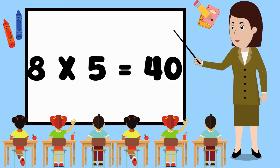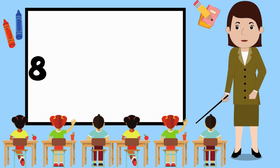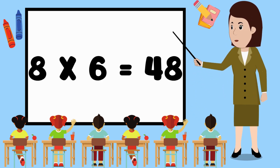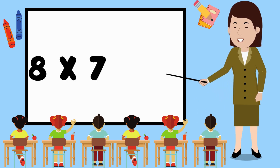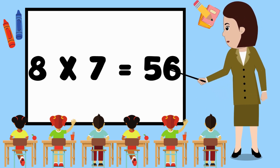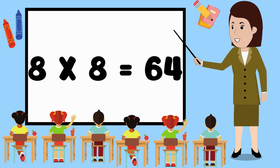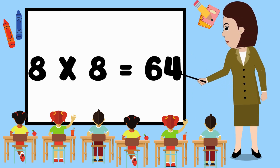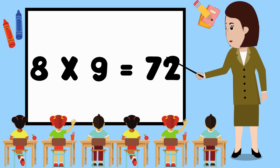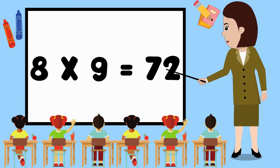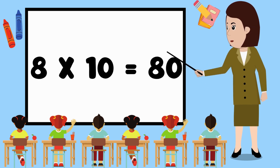8 5s are 40. 8 6s are 48. 8 7s are 56. 8 8s are 64. 8 9s are 72. 8 10s are 80.